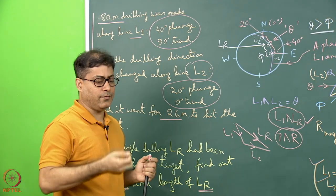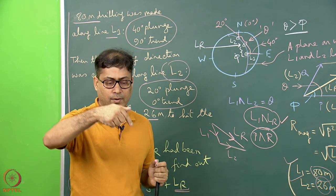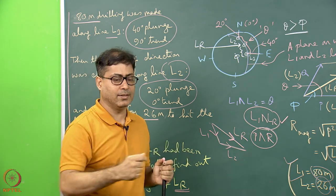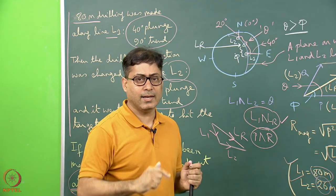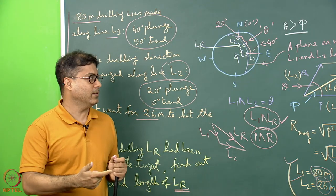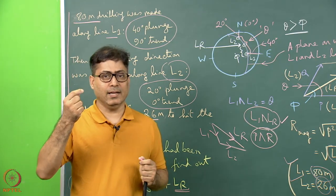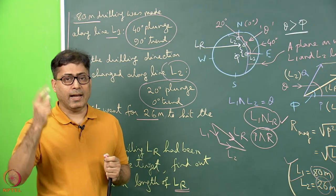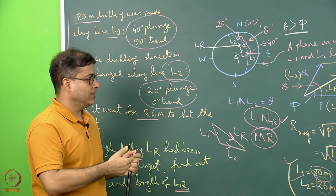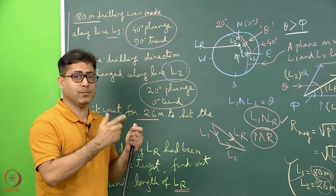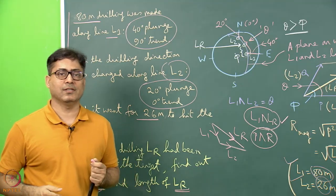If instead of two drilling runs there were three — L1, L2, and then L3 — with respective depths, plunges, and trends given, we can similarly find the resultant Lr line's attitude and length. In this way, vectors can be used not only to solve stress problems but also other problems in structural geology.